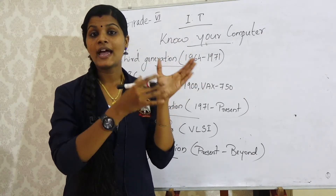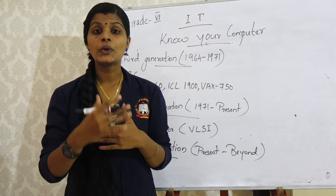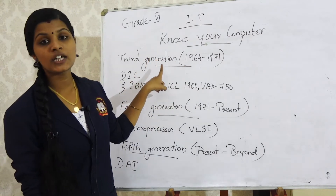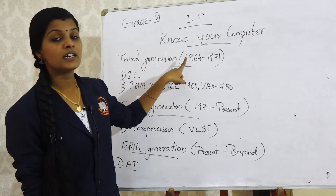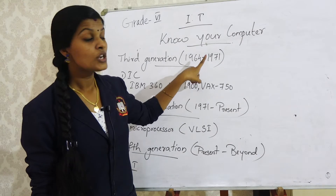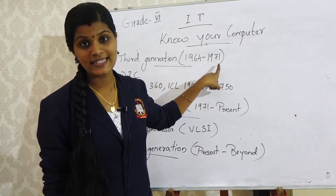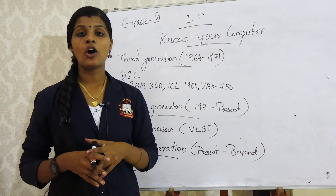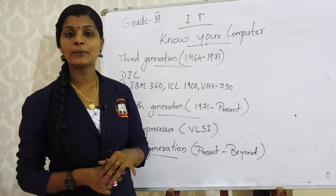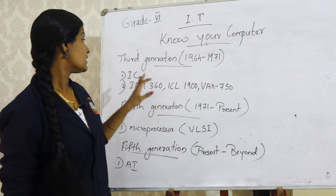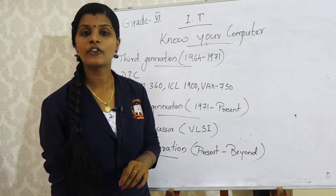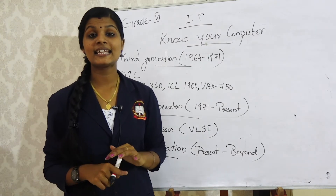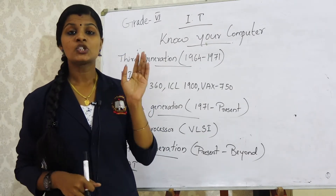Because of the disadvantages of the second generation, we were forced to make third generation computers. Third generation computers are from the year 1964 to 1971. Now we can see the main component used in third generation: the IC, that is, integrated circuit.